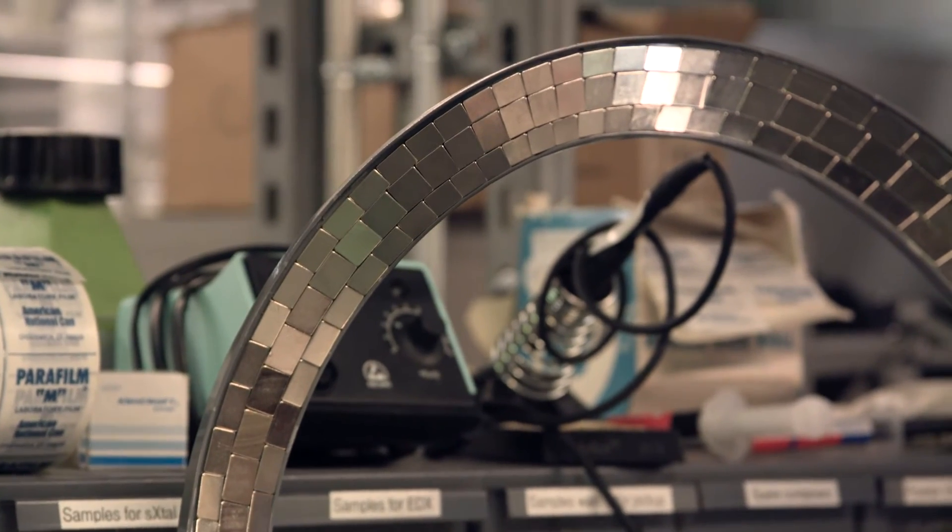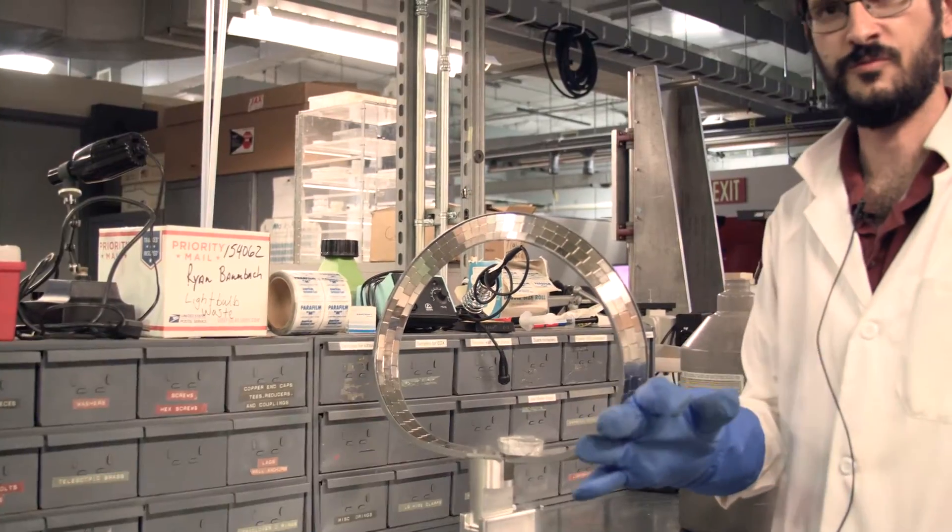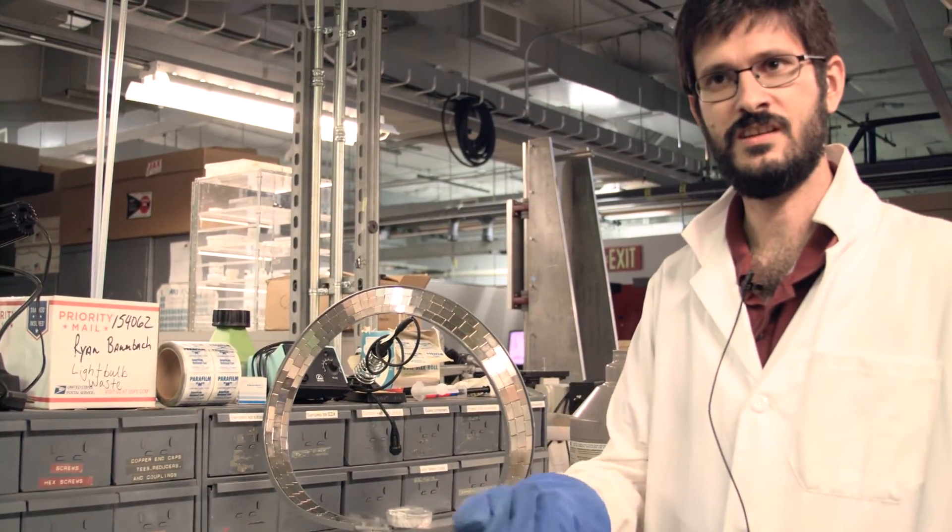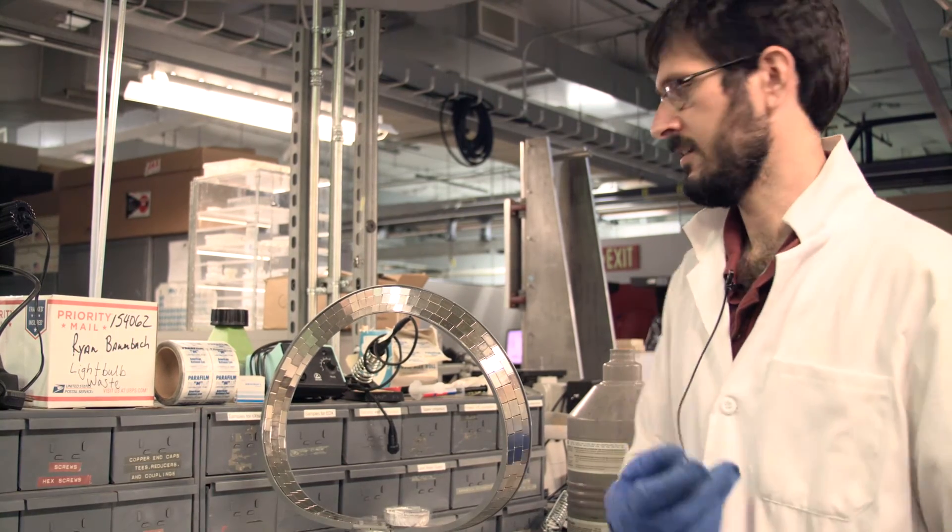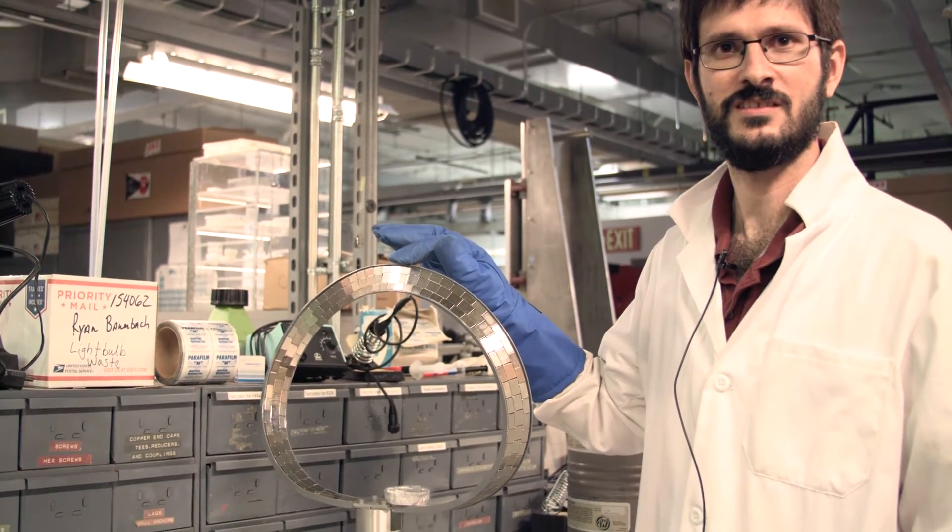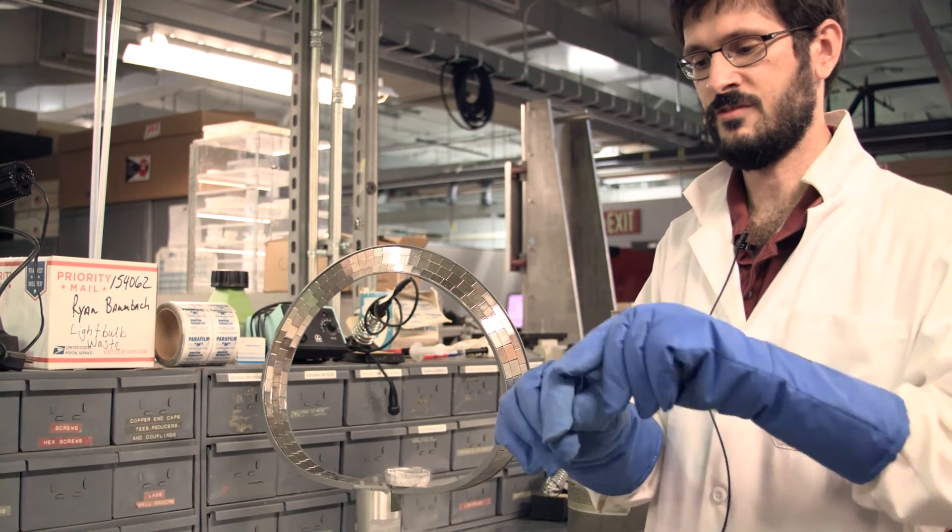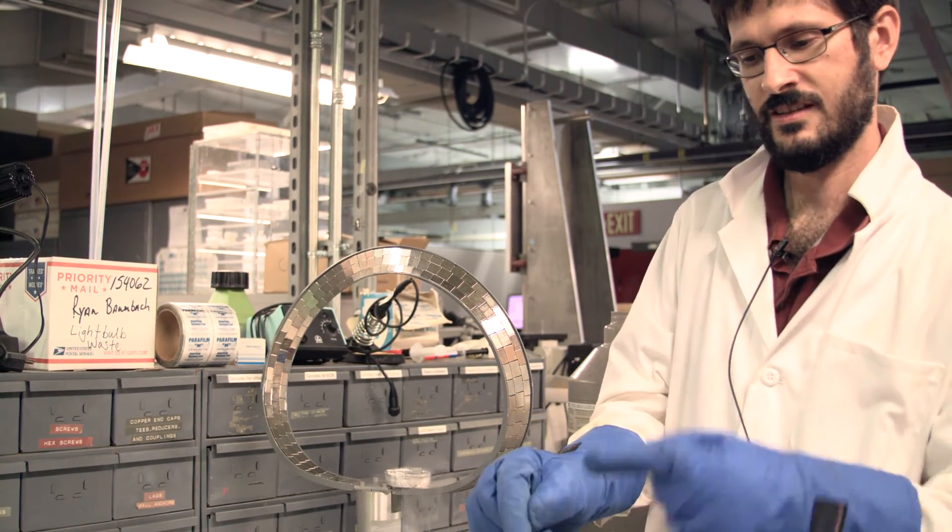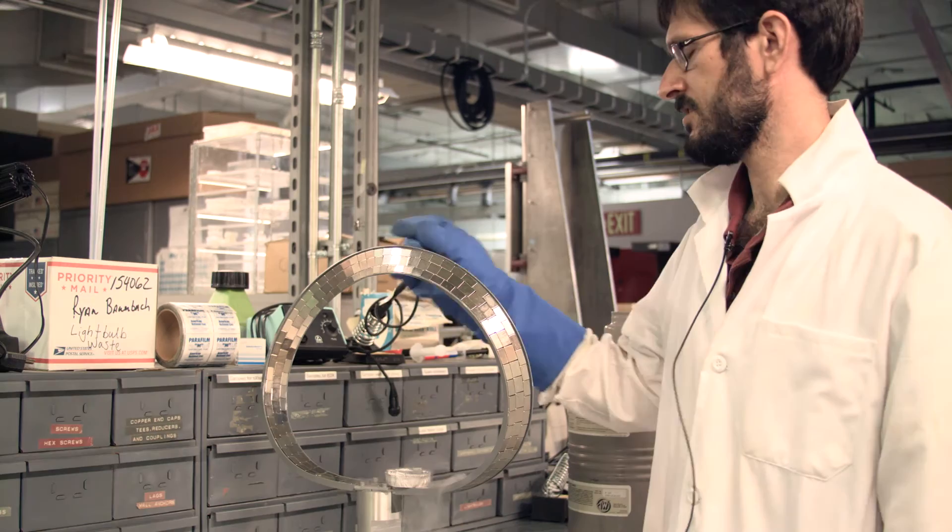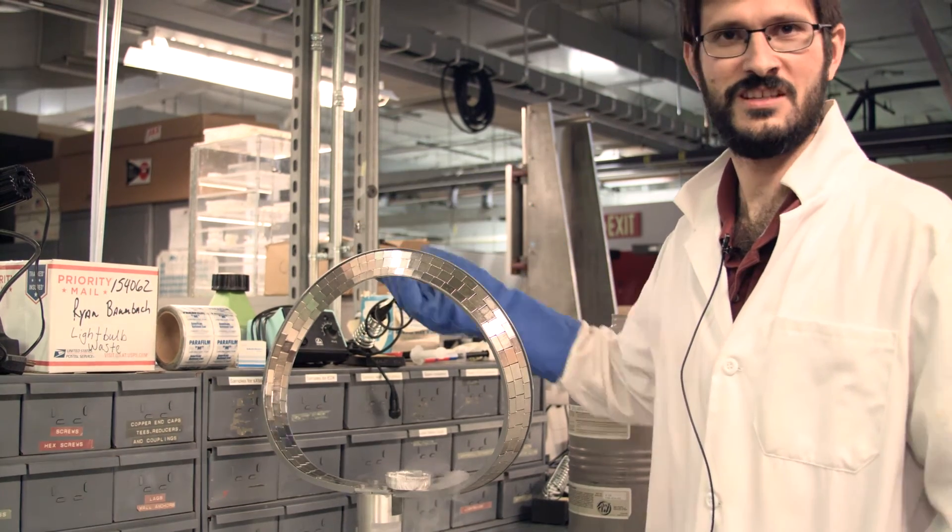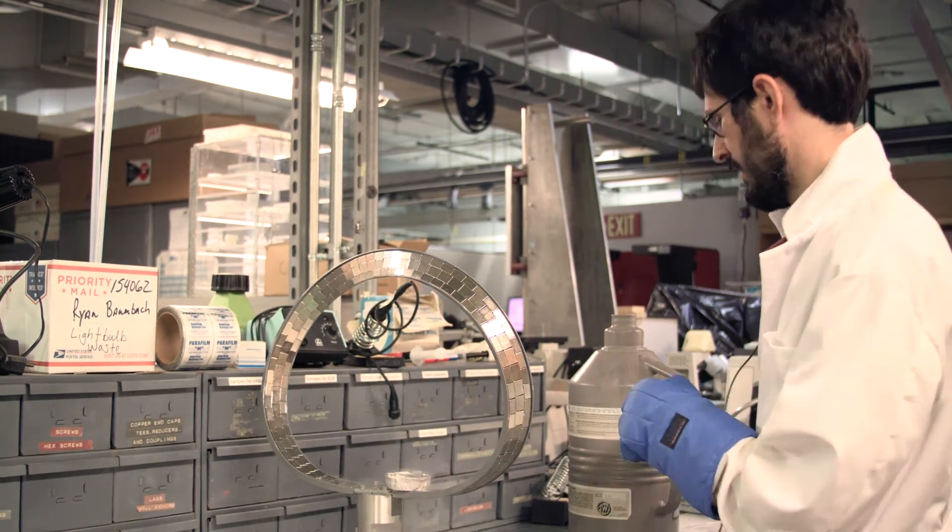And anyone can make one of these if you just take like a strip of paper and put one twist in it and then connect the ends. And it's a special shape that actually only has one side to it. So this is different from a piece of paper where you make a loop and it has two distinct sides. In a shape like this, both sides are connected to each other.